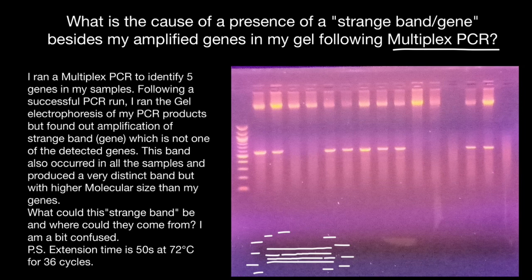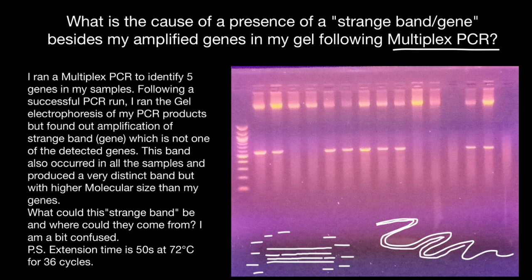When doing multiplex PCR, imagine we have a long fragment of double-stranded DNA. Instead of designing two primers, we design multiple primers. For example, we want this fragment — so we design primers here. We're also interested in another fragment, so we design primers there as well. And we're interested in yet another fragment — it can be a gene — so we design primers for that too. These are all different sequence primers, and they don't necessarily have to be for the same chromosome.